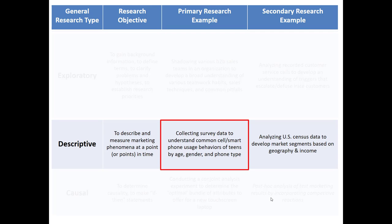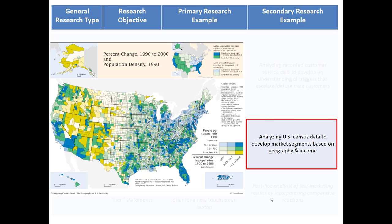As a primary research example, imagine we collect survey data to understand common cell or smartphone usage behaviors amongst teens by age, gender, and phone type. In other words, do younger teens tend to use different apps than older teens? Or maybe iPhone teen users play different games than Android users? As a secondary research example, we could be analyzing U.S. Census data to develop market segments based on geography and income.